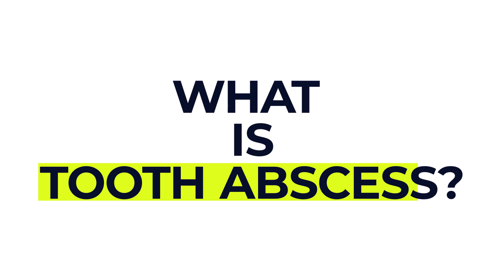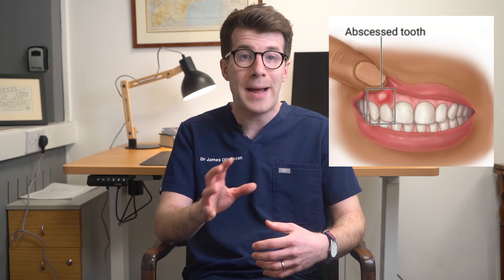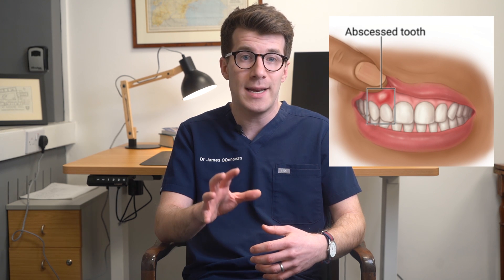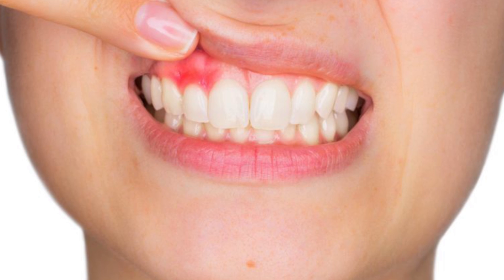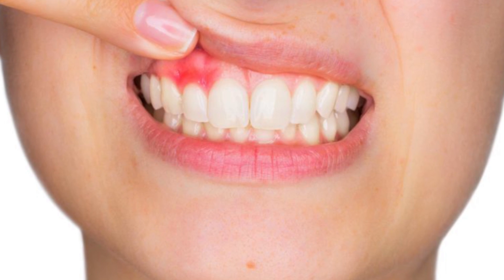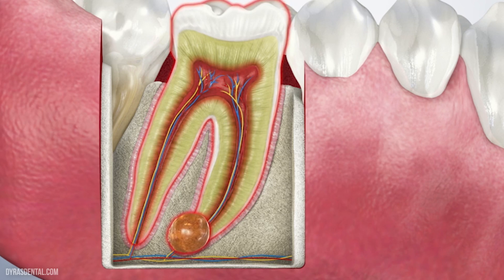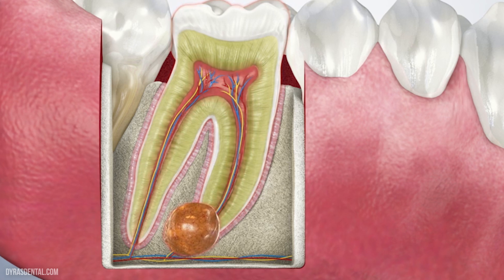A tooth abscess is a pocket of pus from a bacterial infection in your gums, and it usually looks like a red, swollen bump, boil, or pimple. It affects the involved tooth, but the infection can also spread to surrounding bone and neighbouring teeth. Abscesses can occur in different places around a tooth for different reasons.